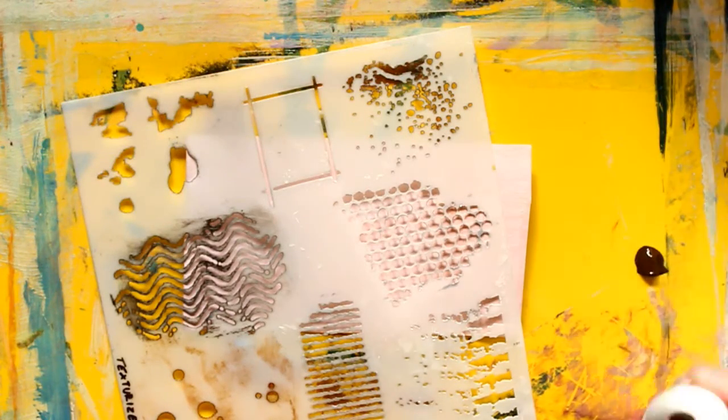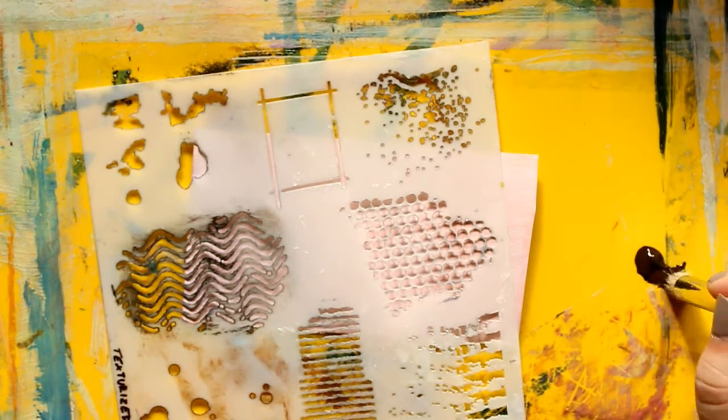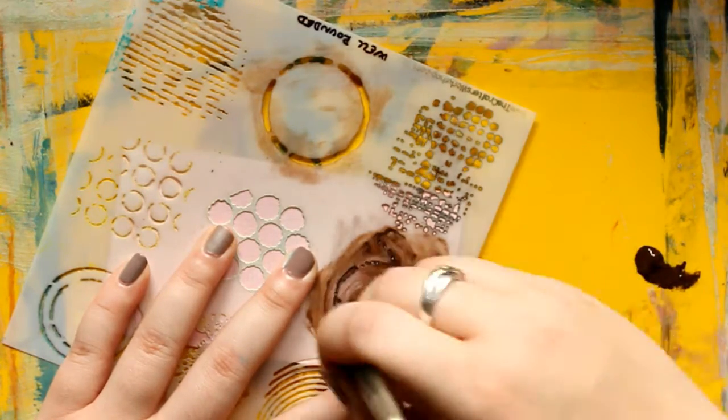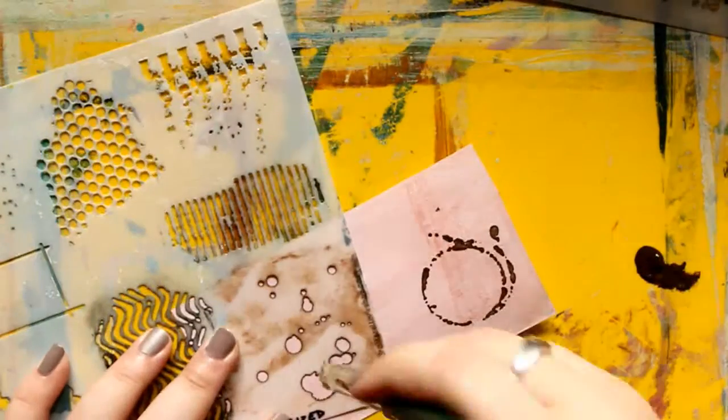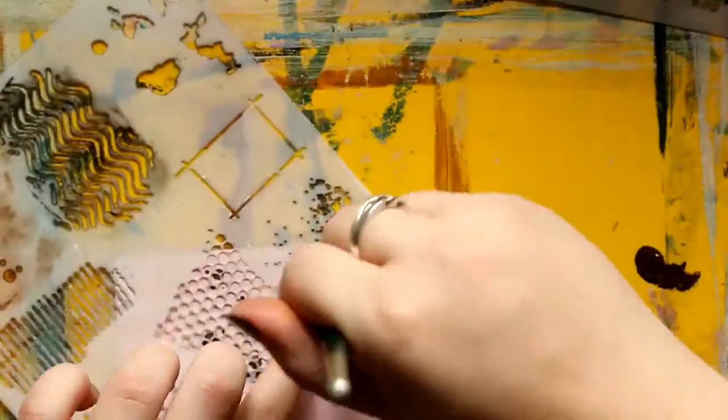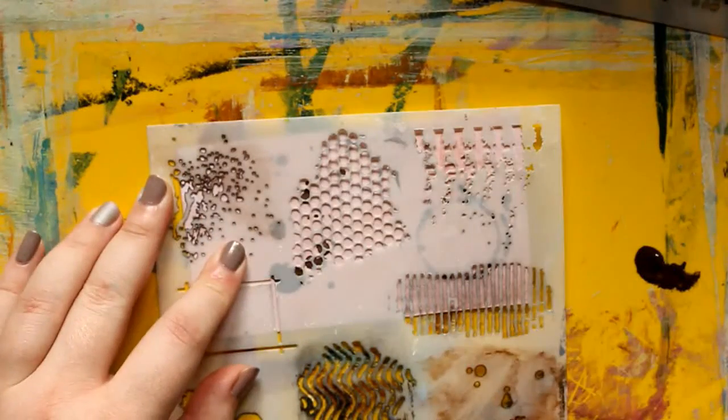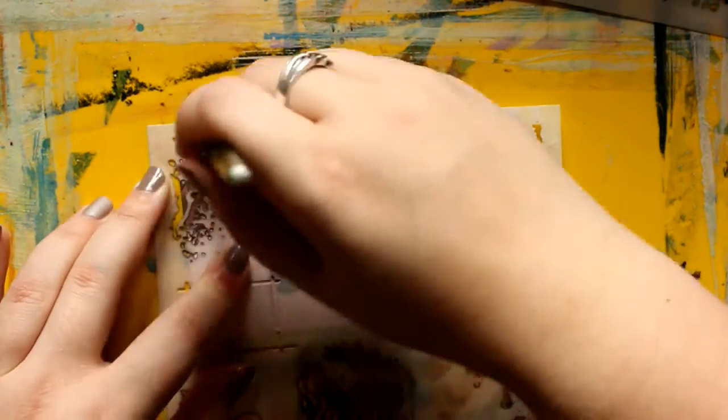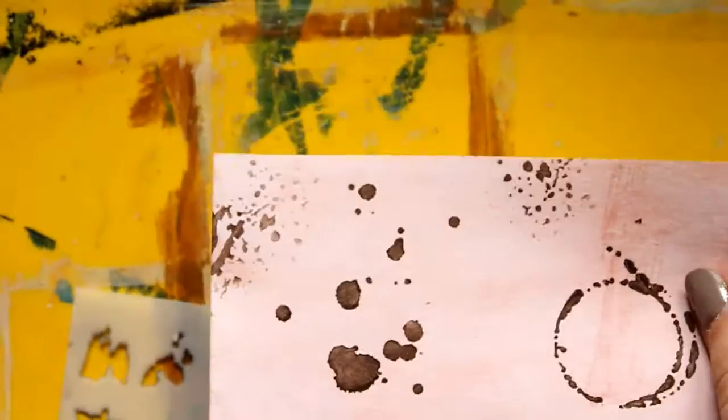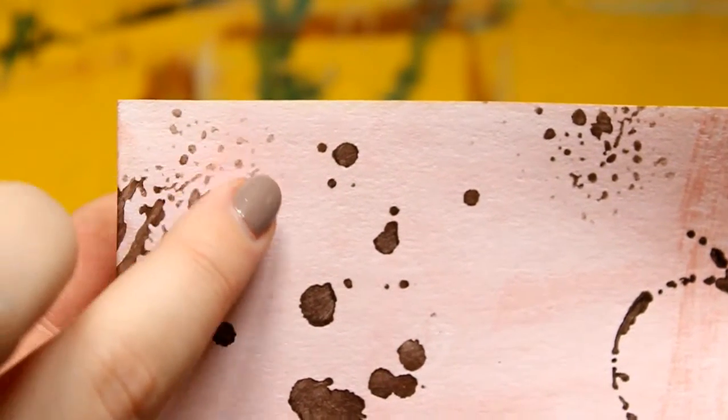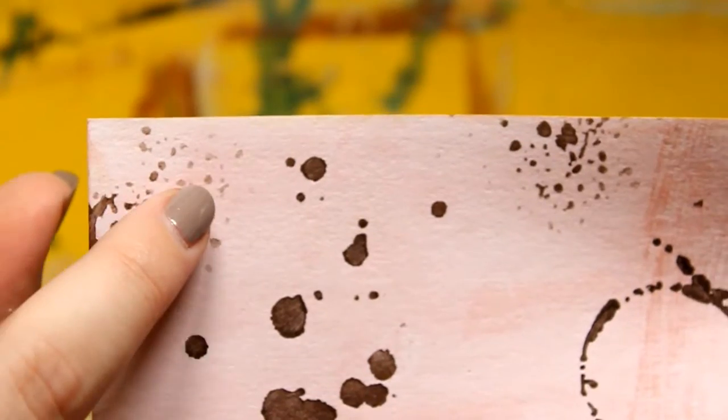You can put out a little bit of brown acrylic paint, take your brush and pounce away. And the thing I like the most about these is when you have a really dry brush and you get these just shadows of a pattern. That's my favorite part.